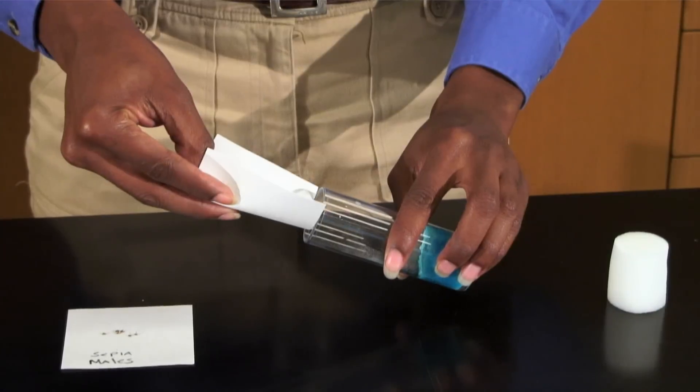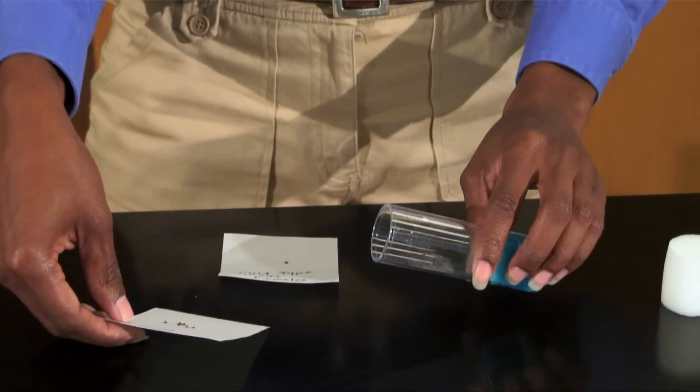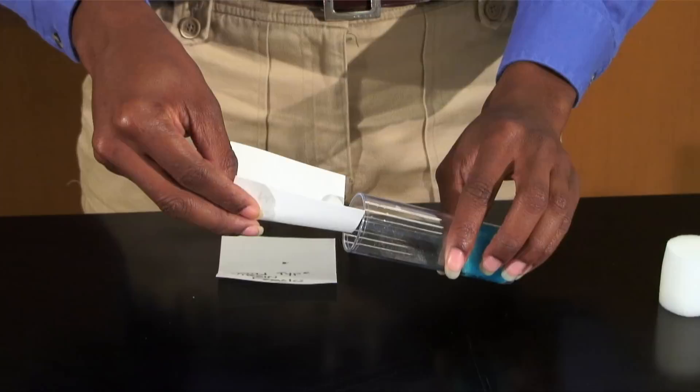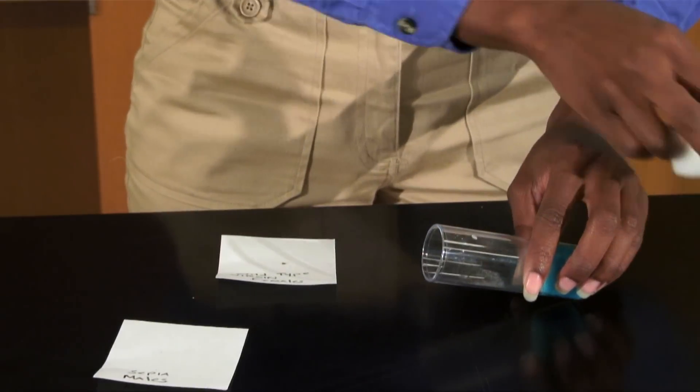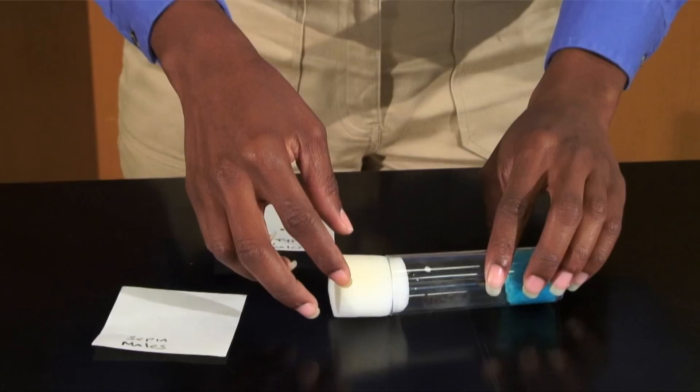Allow them to mate for three to five days, then remove them from the culture. Once the new adults emerge, you can accumulate data on the genotypic and phenotypic ratios. Also, they may be used to produce another generation.